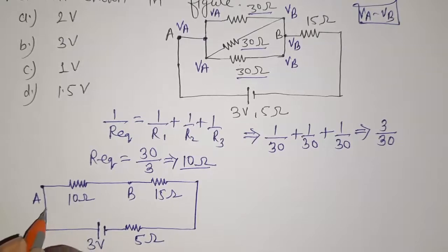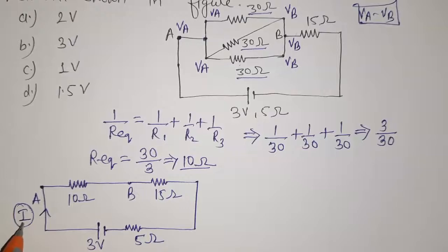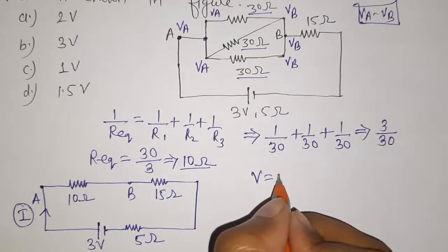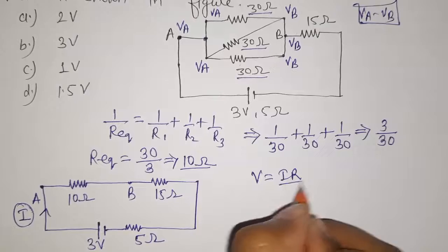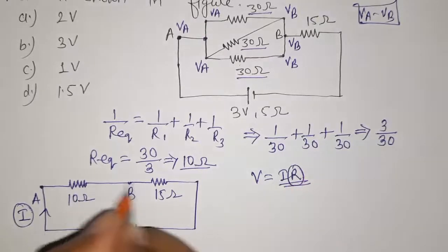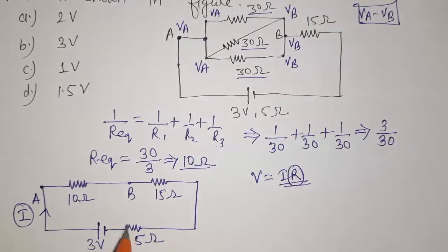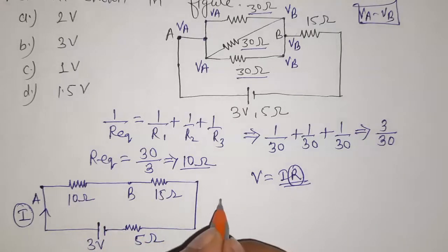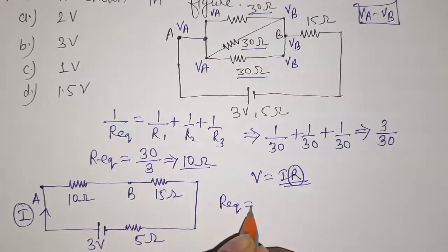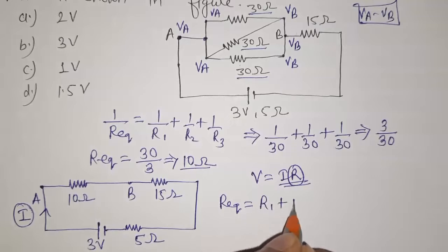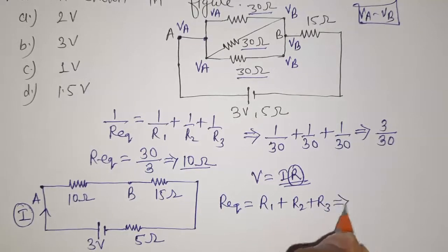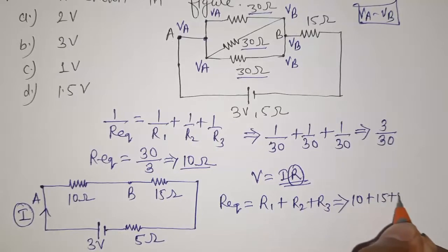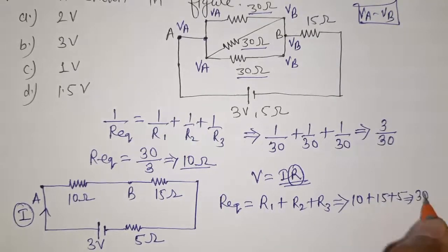We need to find the current through this circuit, using Ohm's law: V equals I times R. The three resistances — 10 ohms, 15 ohms, and 5 ohms — are in series combination, so R_equivalent equals R1 plus R2 plus R3, which gives 10 plus 15 plus 5, equal to 30 ohms.